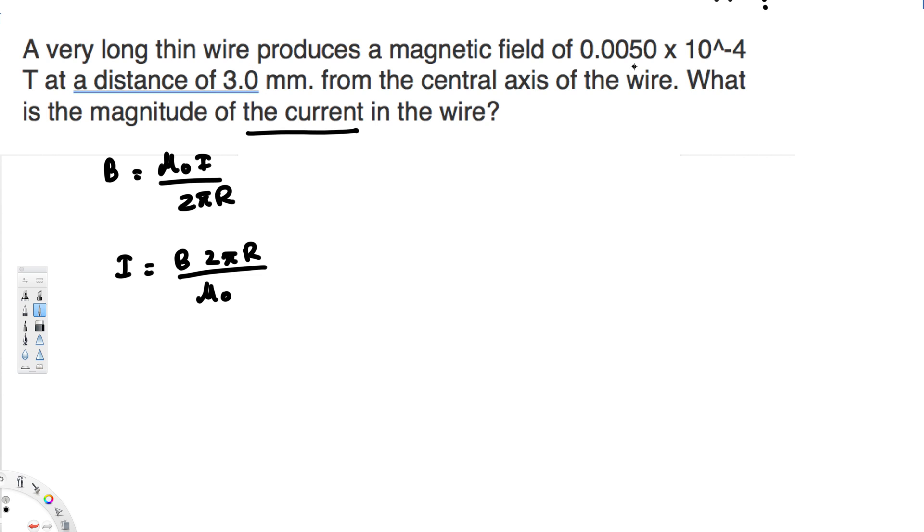We have the magnetic field B = 0.005 × 10⁻⁴ tesla, and we have the distance R = 3 millimeters = 3 × 10⁻³ meters.